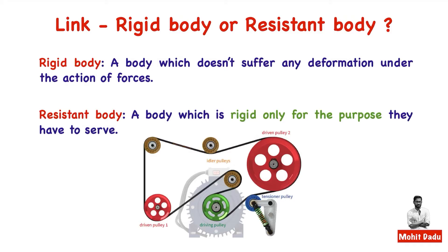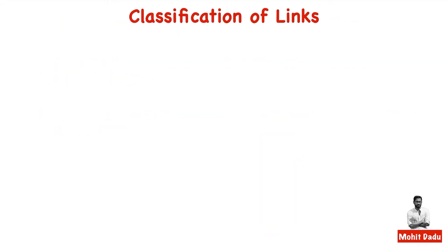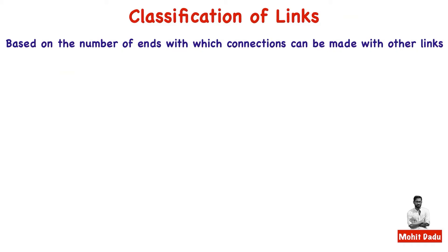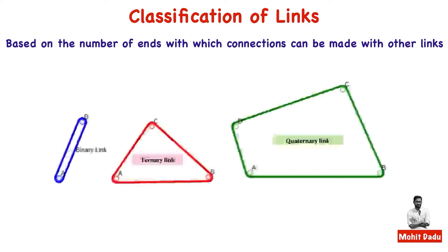Now we will study the classification of links. Links are mainly classified based on the number of connections that can be made with other links. Based on this, we have binary links, ternary links, and quaternary links. A binary link has two connection points or nodes, a ternary link has three connection points, and a quaternary link can offer four connection points.